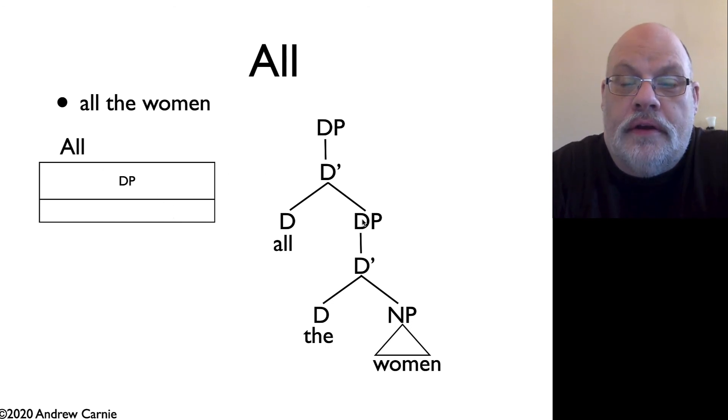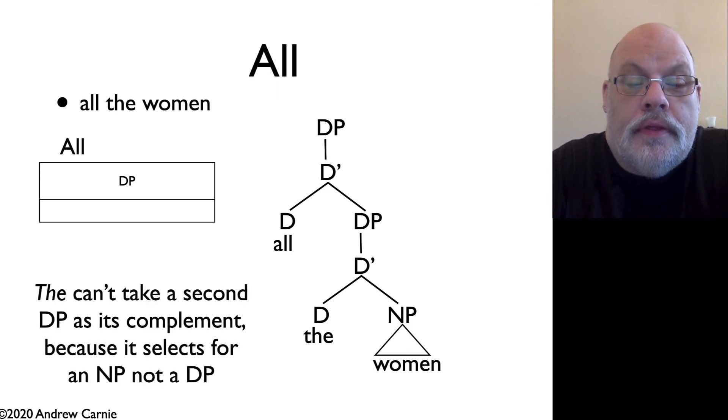And we specify this in the theta grid by saying 'all' can take a DP. Contrast this to the theta grid we might have for 'the'. 'The' takes a noun phrase. So the reason you can't have another determiner in this position between the 'the' and 'women' is because D selects for a noun phrase as its complement. Whereas 'all' selects for a DP. There is a challenge here worth thinking about, which is the sentence 'all women'. And I'll just leave that up to you for a moment. But think about what we just talked about on the previous slide about null determiners.